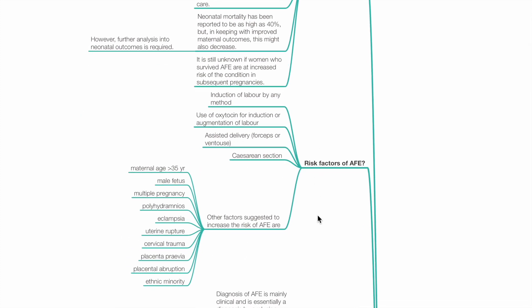What are the risk factors of AFE? Risk factors include induction of labour by any method, use of oxytocin for induction or augmentation of labour, assisted delivery, caesarean section, and other factors such as maternal age over 35 years, male fetus, multiple pregnancy, polyhydramnios, eclampsia, uterine rupture, cervical trauma, placenta praevia, placental abruption and ethnic minority.